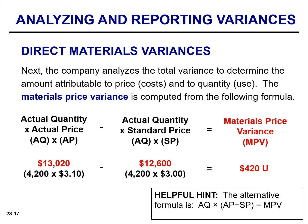The price variance can also be calculated by multiplying the actual quantity purchased by the difference between the actual and standard price per unit. The calculation using the alternative formula is $4,200 times $0.10, or $420, which is unfavorable because the actual price per unit exceeds the standard price per unit. When calculating the material price variance, my preference is to use the alternative formula.